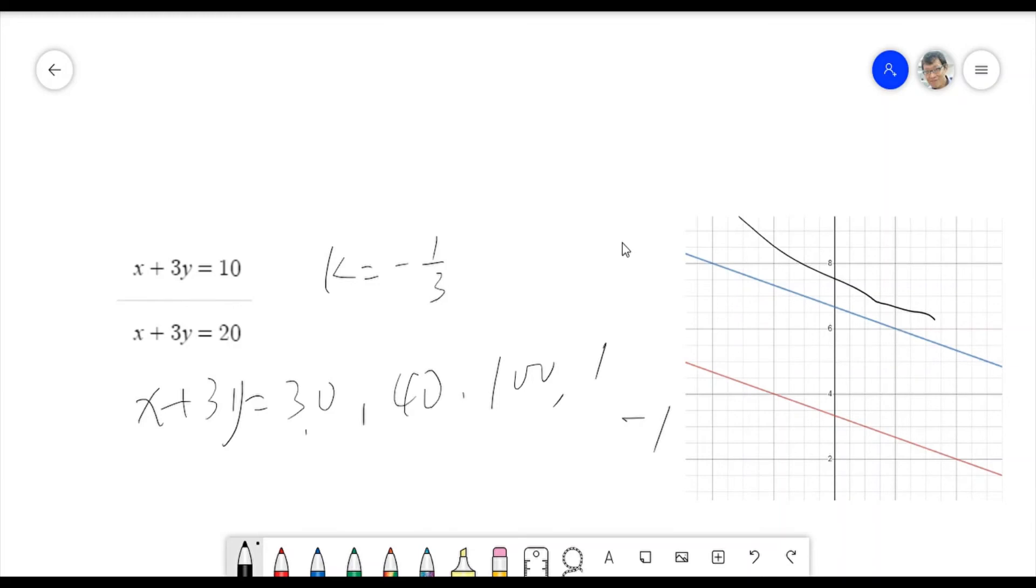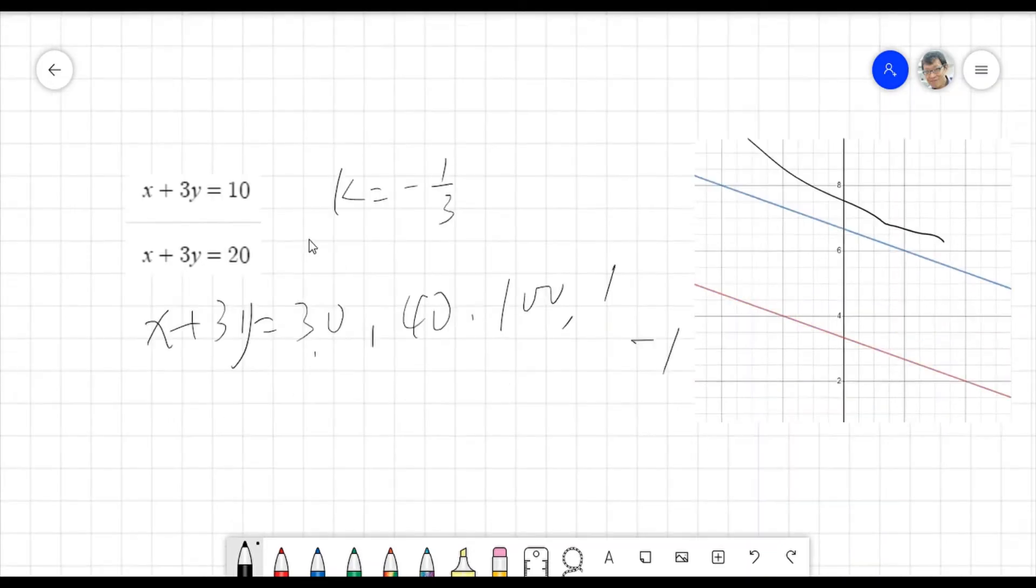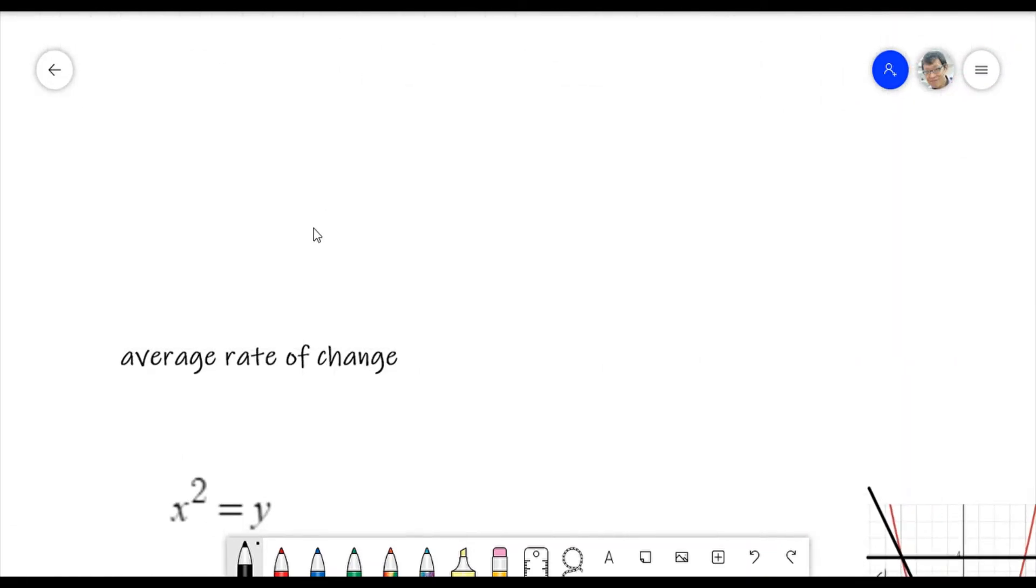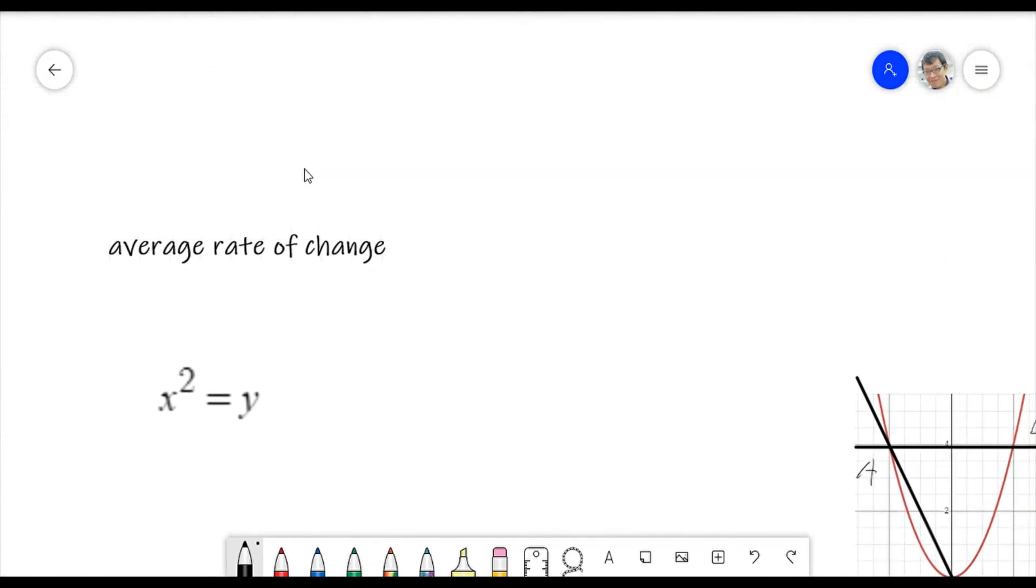Let's go to nonlinear. Before that, I gave a concept. Another concept is average rate of change. In fact, that's exactly what we talk about the slope. But why we use another word or another expression, average rate of change?